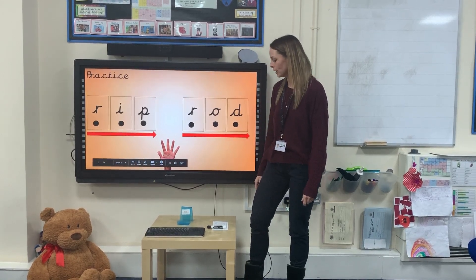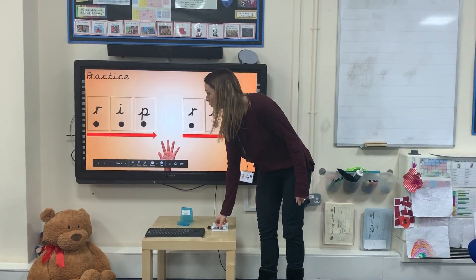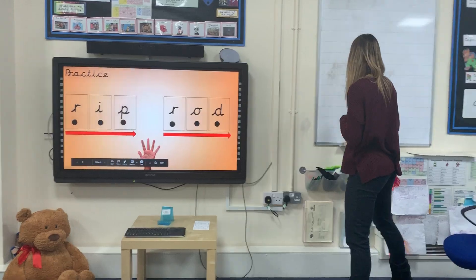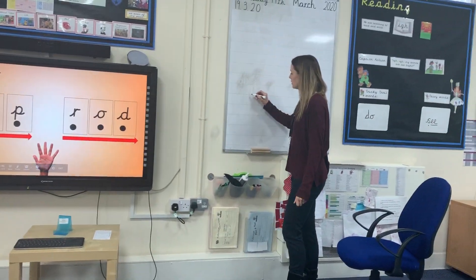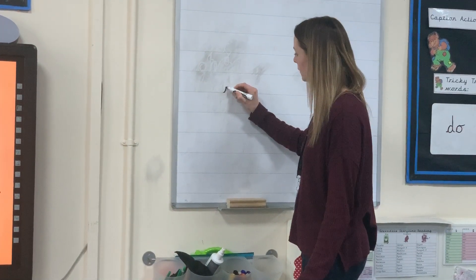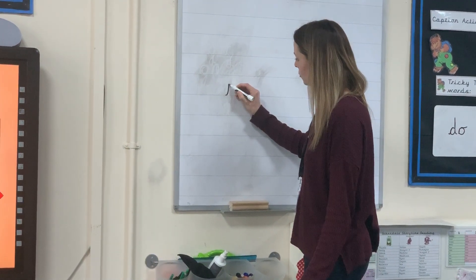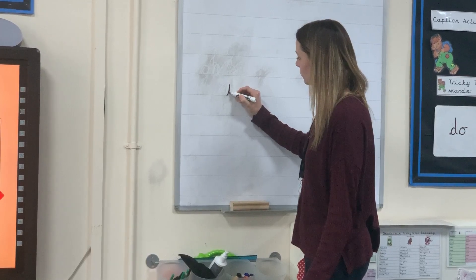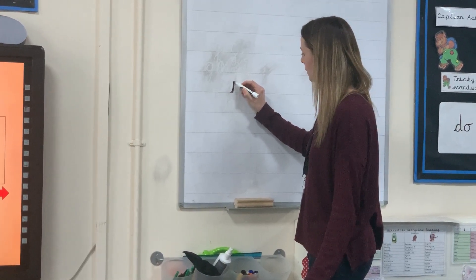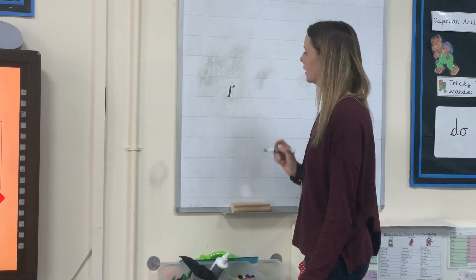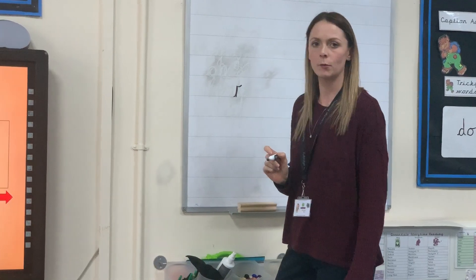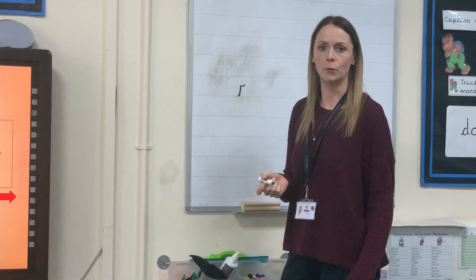I'm now going to have a go at writing the R sound. Start on the line, lead up, drop down, back up, lead on with a hat. Pause the video and have a practice with these in your books now.